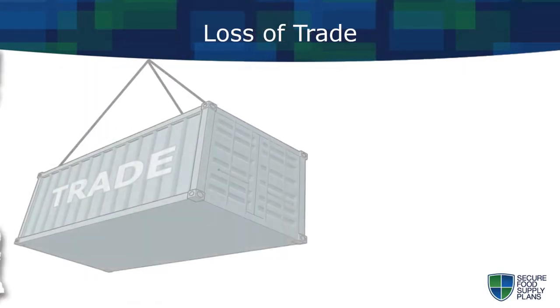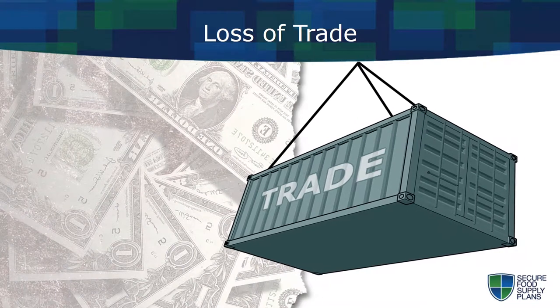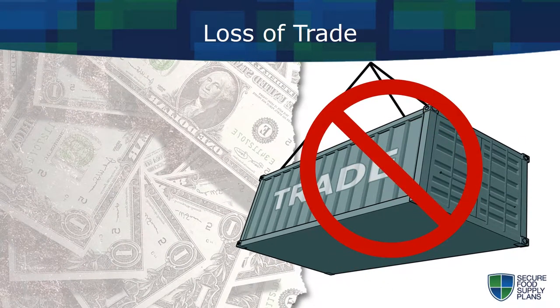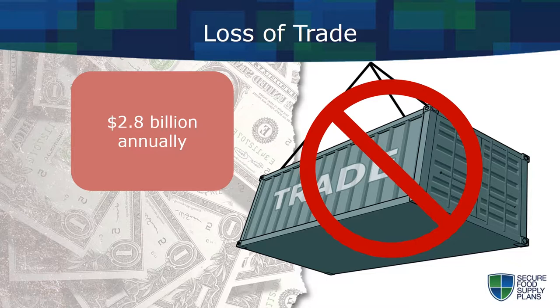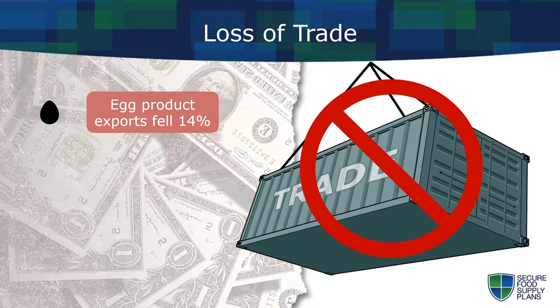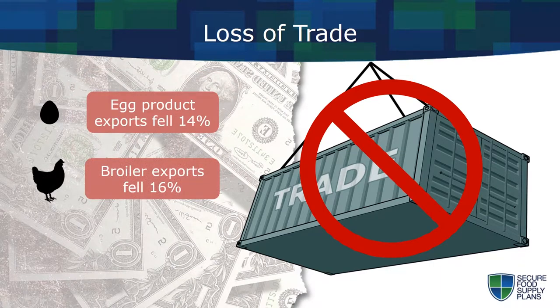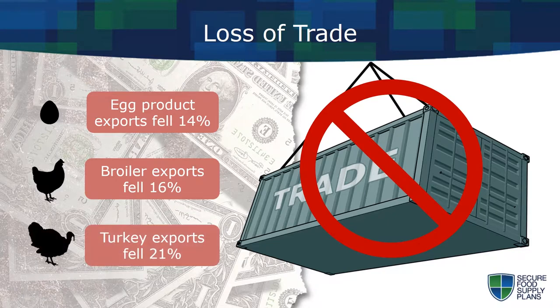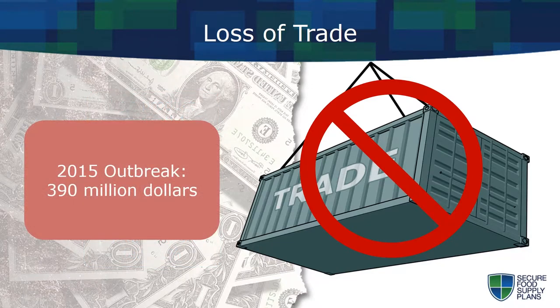Some of the most devastating economic losses result from trade bans, which threaten poultry and egg exports valued at almost $2.8 billion annually. These bans can affect not only operations in the outbreak region, but may prevent exports from unaffected companies in the same state or even nationally. During just the first six months of the 2015 outbreak, egg product exports fell 14%, broiler exports fell 16%, and turkey exports fell 21%. The total value of lost U.S. poultry and egg exports during the 2015 outbreak has been estimated at nearly $390 million.